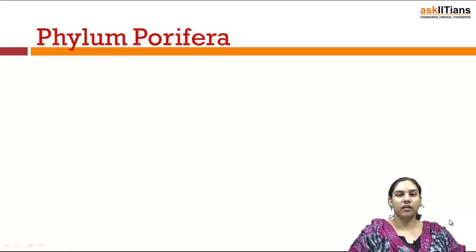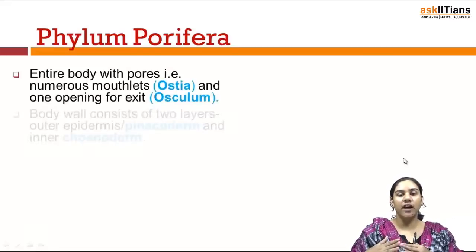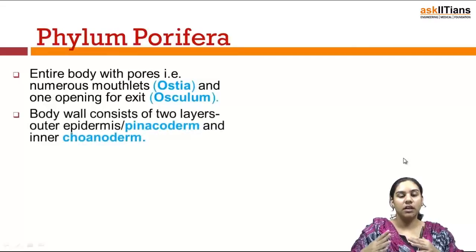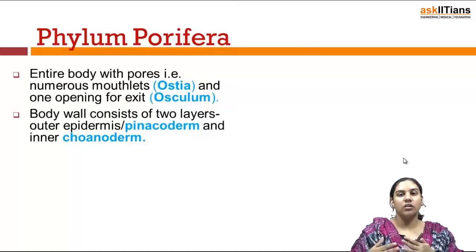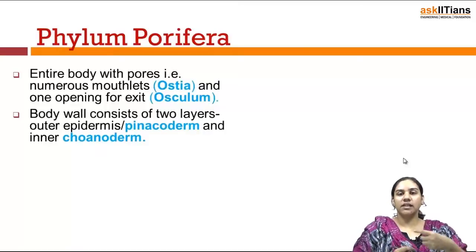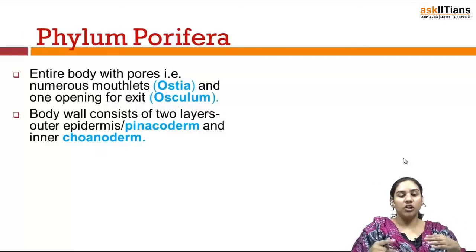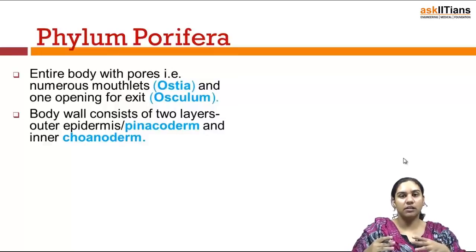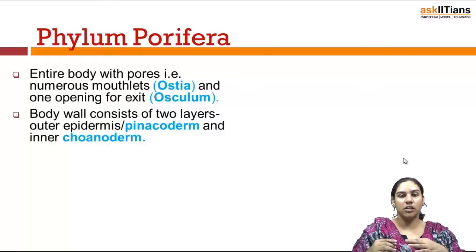In the phylum Porifera, the entire body is covered with numerous small pores that are also known as Ostia. These are the pores present on the body of the sponges, and there is a single opening at the top of the sponge body which helps in the exit of water and particles from the body of the sponges, known as the osculum.